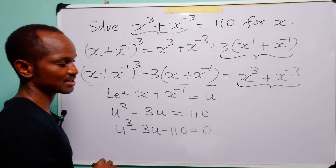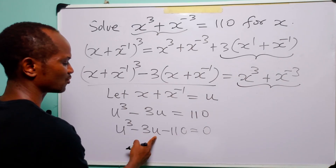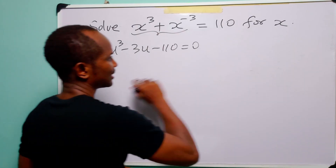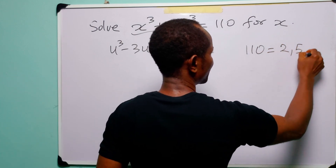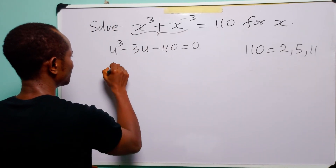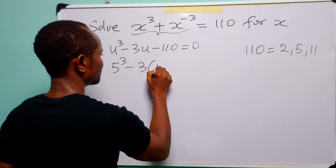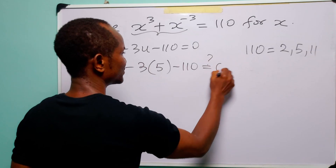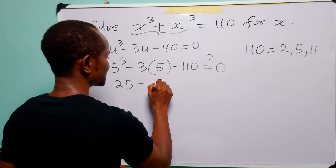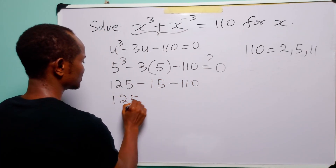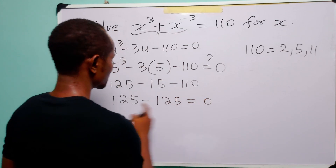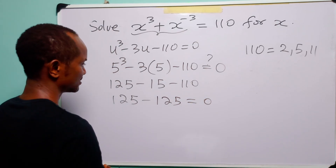We now have a cubic equation u³ − 3u − 110 = 0 to solve. Using the trial and error method, the factors of 110 are 2, 5, and 11. Trying u = 5: 5³ − 3×5 − 110 = 125 − 15 − 110 = 0. So u = 5 is a solution.